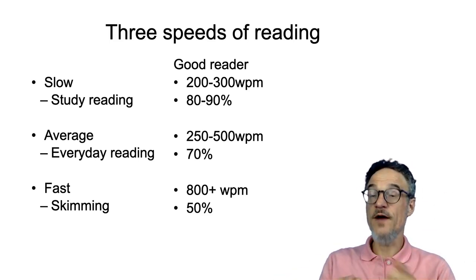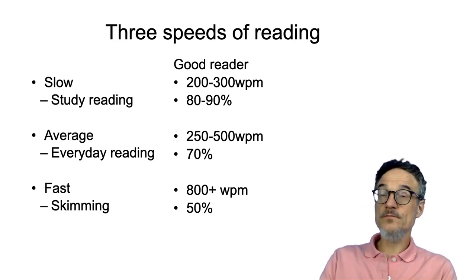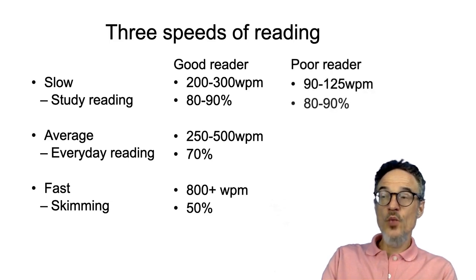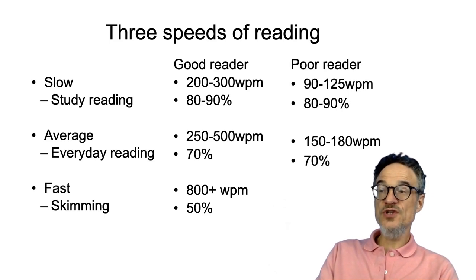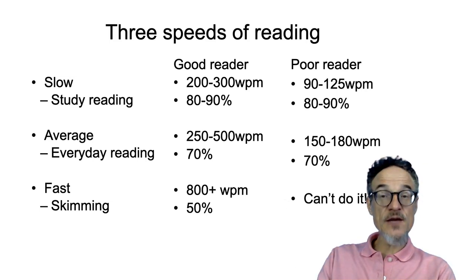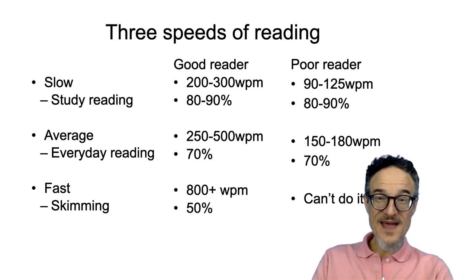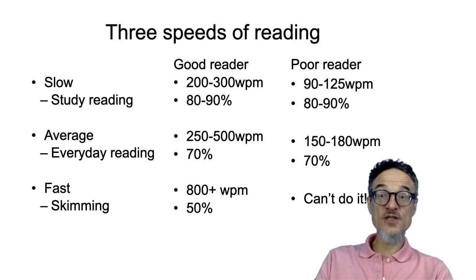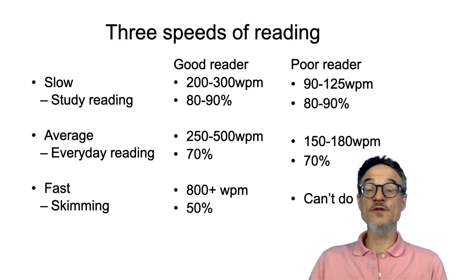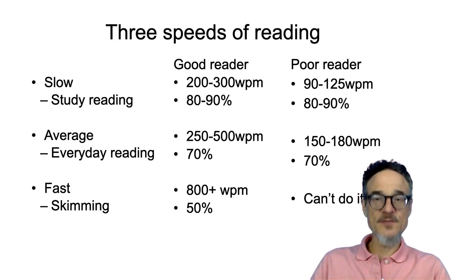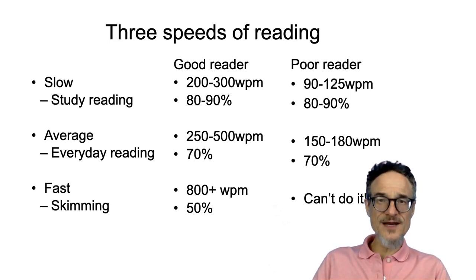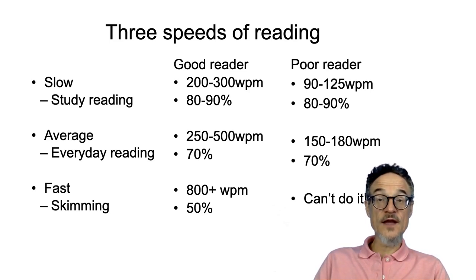That's for a good reader. A poor reader, on the other hand, will read much more slowly. A poor reader doing study reading can still understand about 80 or 90% — the same amount as a good reader — but they are just a bit slower. Similarly, a poor reader reading a novel or magazine can still understand about 70%, but at a lower speed. Skimming is something only good readers can do. To be able to skim, you first need to be able to read quite quickly in everyday reading, and you need to be able to study-read more quickly.